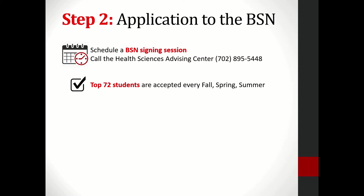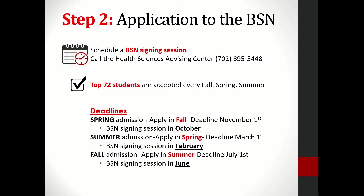The top 72 students are accepted every fall, spring, and summer. There is really no way to predict the cutoff scores, so we encourage all students to do the best they can. You'll want to apply the semester before you plan on starting the full program. For example, if you wish to start in the spring, you'll need to apply in October to meet the November 1st deadline. Students are usually notified within the first two weeks after the deadline — in this example, by November 15th.